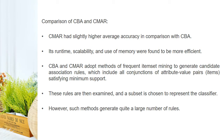Comparing CBA and CMAR: CMAR had slightly higher average accuracy than CBA. Its runtime, scalability, and use of memory were found to be more efficient. CBA and CMAR adopt methods of frequent itemset mining to generate candidate association rules, which include all conjunctions of attribute-value pairs satisfying minimum support. These rules are then examined and a subset is chosen to represent the classifier. However, such methods generate quite a large number of rules.